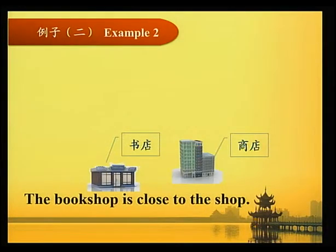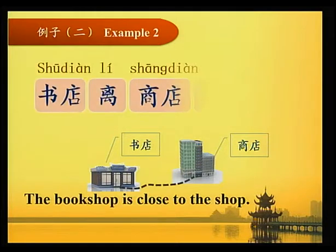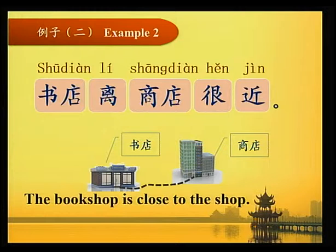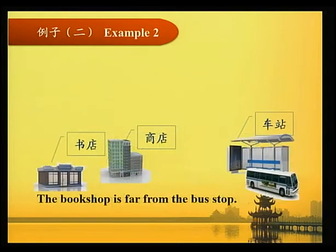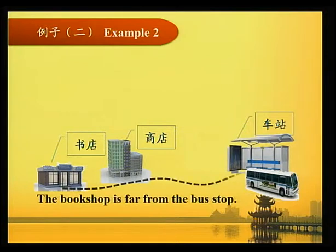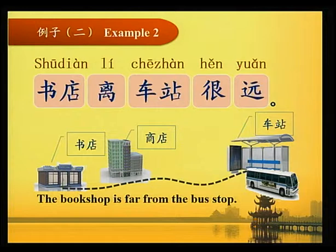例子二 Example two: 书店离商店很近 — The bookshop is close to the shop. 书店离车站很远 — The bookshop is far from the bus stop.